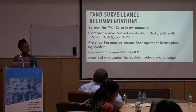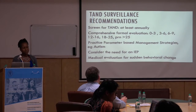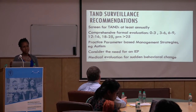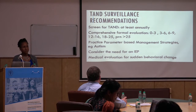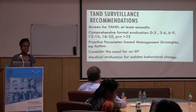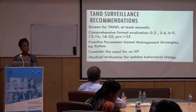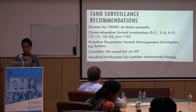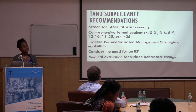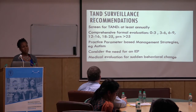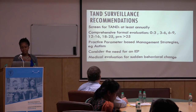These are the surveillance guidelines. We really want folks screening for TAN at least annually, and comprehensive formal evaluations at key ages — zero to three years and so forth. In our center, a comprehensive formal evaluation means a neurodevelopmental evaluation by a physician, a psychological or neuropsychological evaluation, a speech and language evaluation, and whatever else may be needed — but at least those three core evaluations.